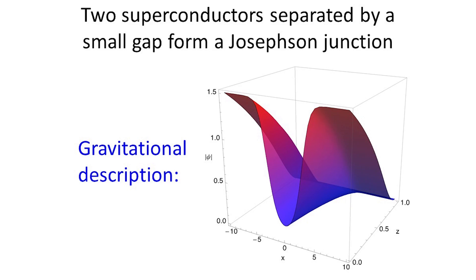If you take two superconductors and separate them just by a narrow gap, you form something called a Josephson junction. These have a number of applications, including allowing you to make very precise measurements of magnetic fields. We decided to see if general relativity could reproduce the properties of a Josephson junction and found that it can.